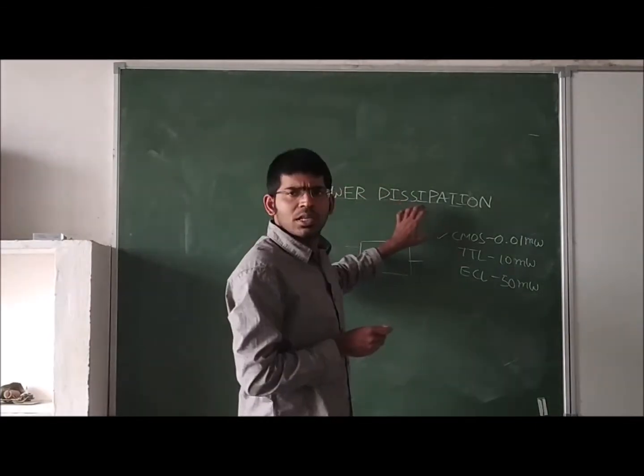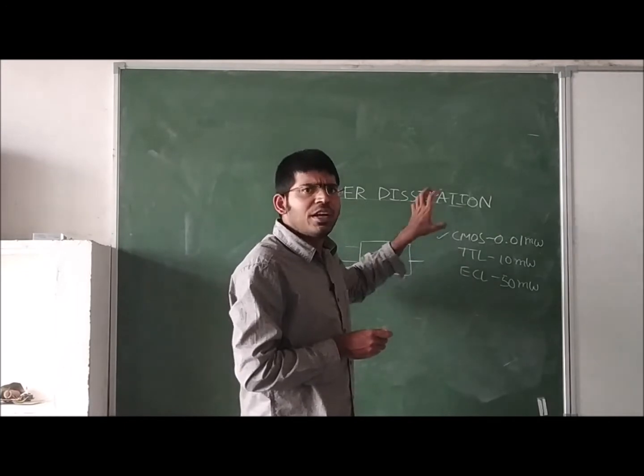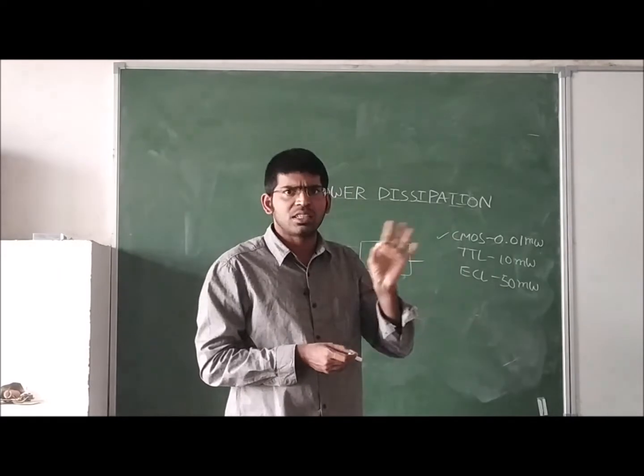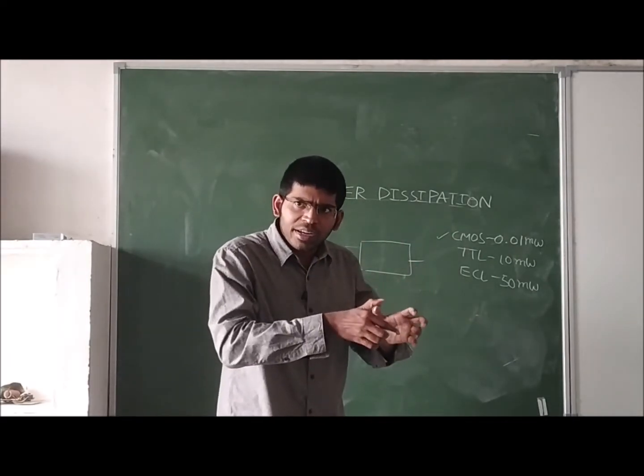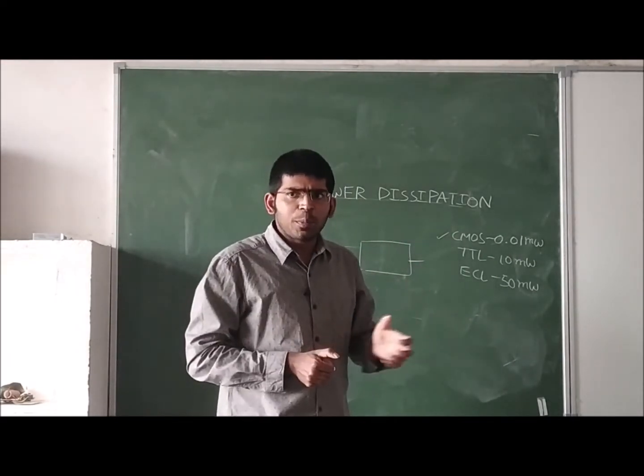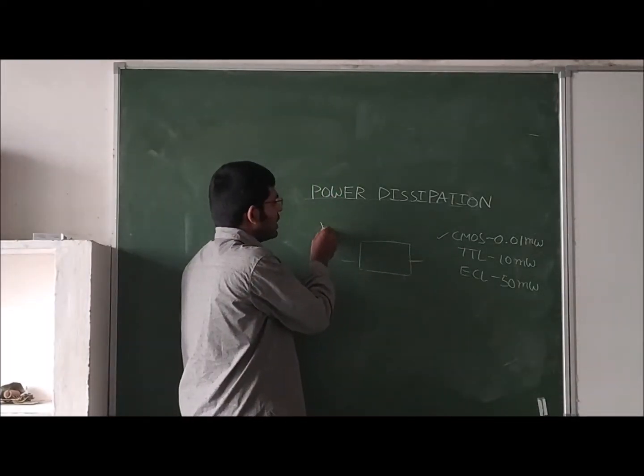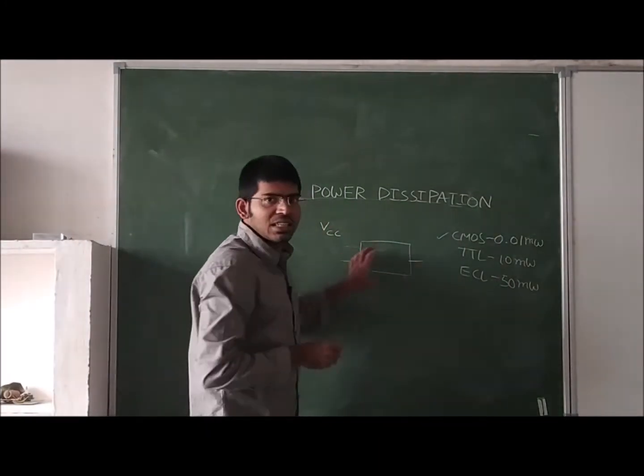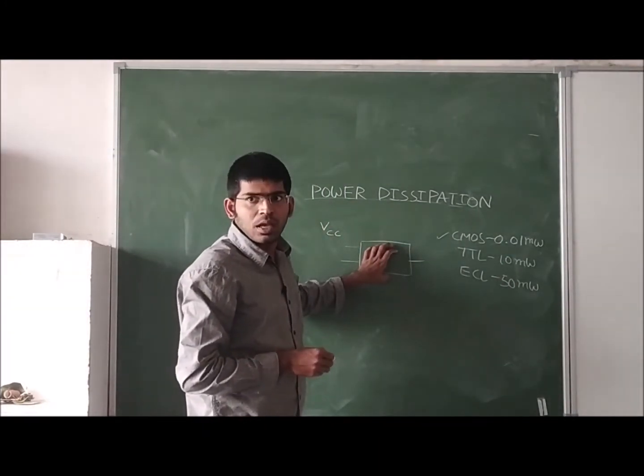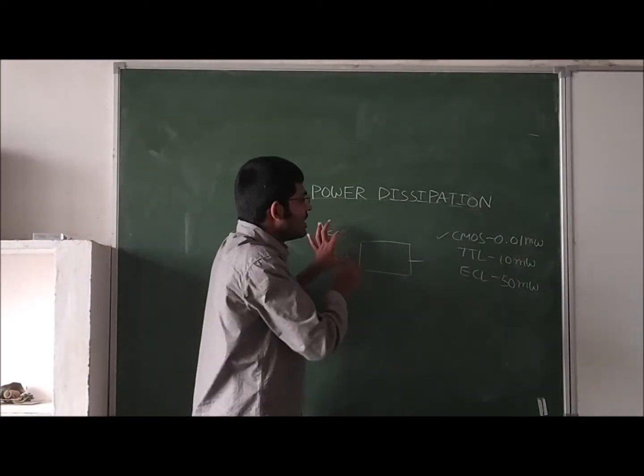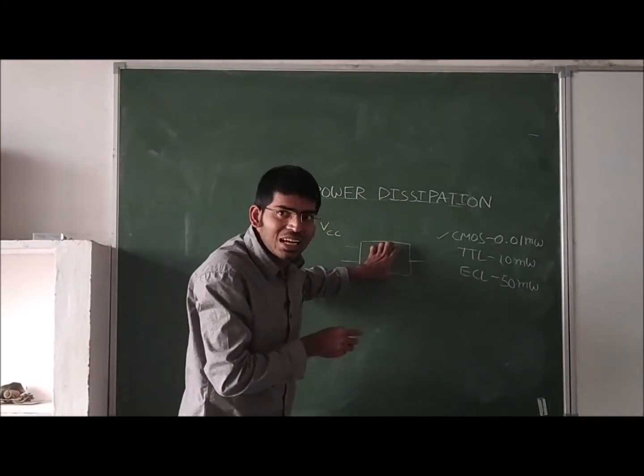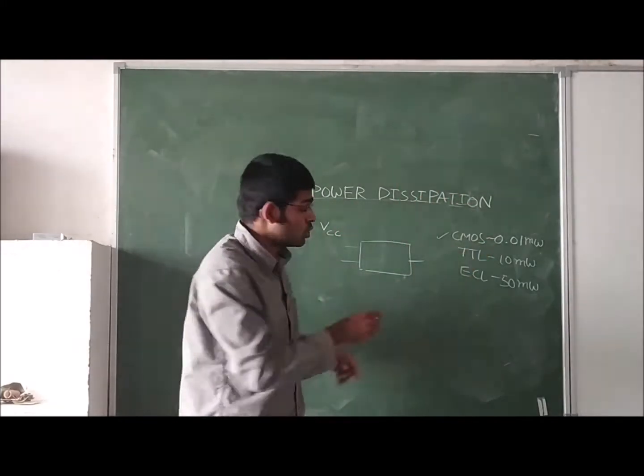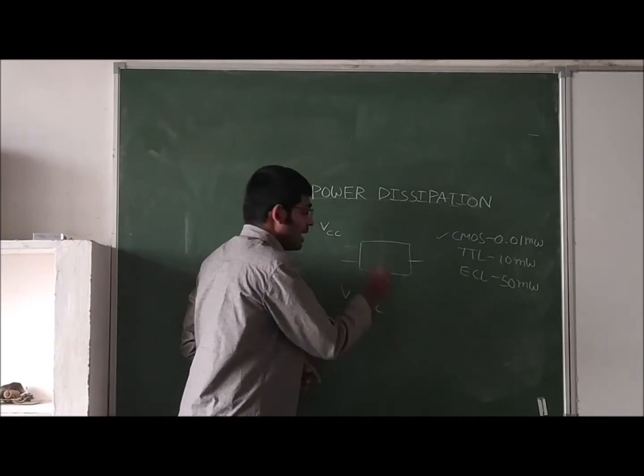What is this power dissipation? If we take any digital logic circuit, whether that is an AND gate or OR gate, any digital logic circuit - how much power it draws from the supply. We can give the supply from DC voltage. For example, this is VCC, this is my digital logic circuit. When we supply DC voltage to this digital logic circuit, how much current it is drawing - so VCC into IC.